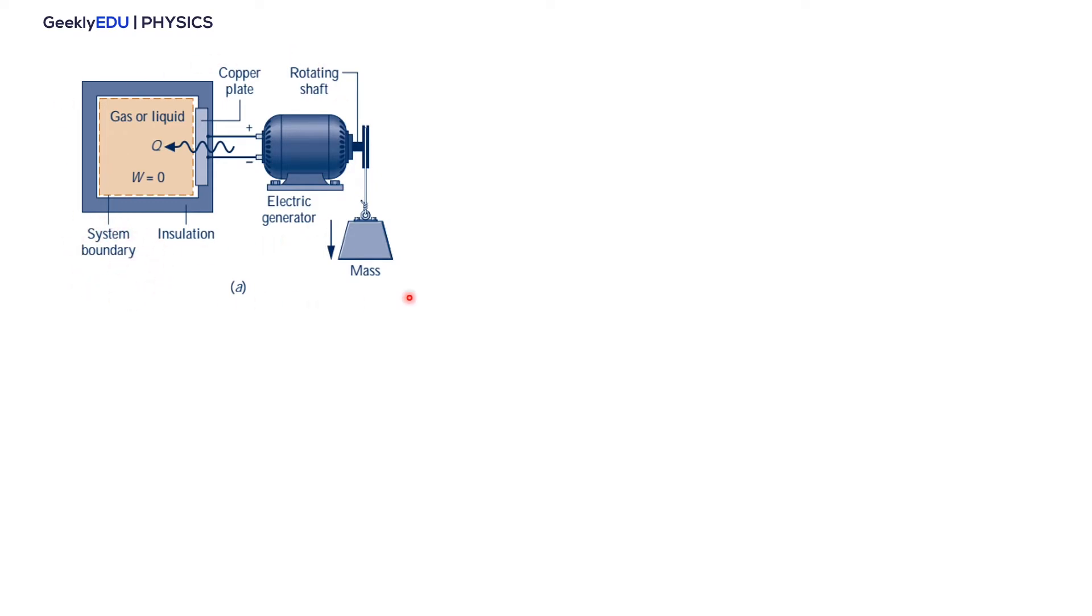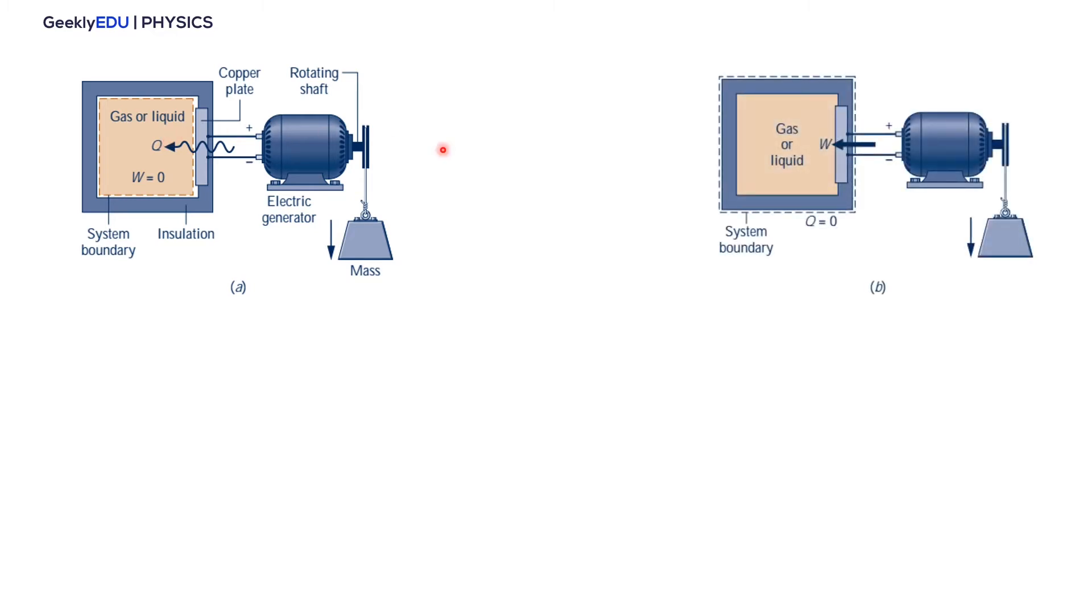For example, in this situation here A, if we define our system boundary as inside this box here, this insulated box, we don't have any work. Nothing's happening here through this, there's no work going in or out the boundary, but we have heat transferred from outside to the inside of the boundary. However, if we set the system boundary as outside the insulated box, well, it's insulated, so we don't have any heat transfers here, but we have electricity that is moving this weight, is lifting this weight. So it's work. So in this case, we have work, but no heat transfer.